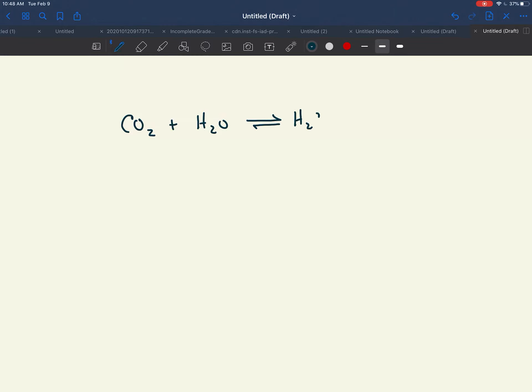CO2 combines with water, and I can draw my arrows like this—I can combine my arrows like this—to form H2CO3. So this is the bicarbonate ion, HCO3-.